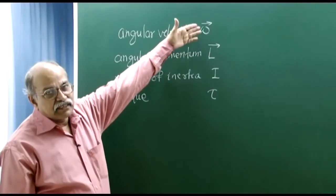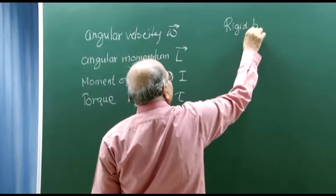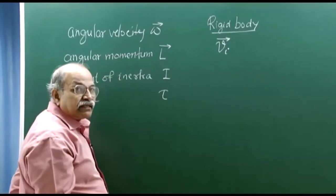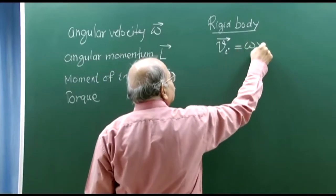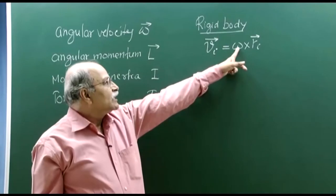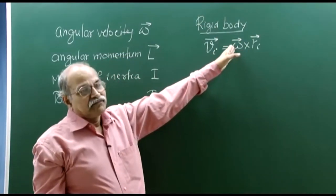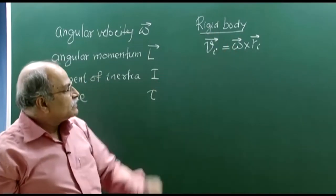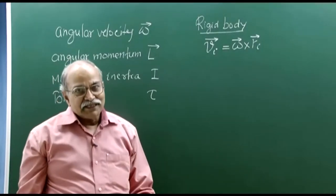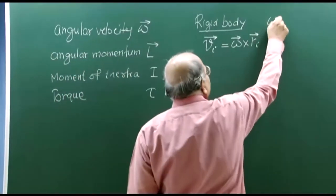Angular velocity is a vector quantity omega. If you have a rigid body which is rotating and you find that the linear velocity of any particle can be written as omega cross r_i, where r_i is the position vector of the particle, and this omega is the same for all particles, then you say that this rigid body has this angular velocity vector. That is how one can identify omega.